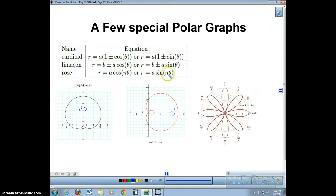Here is a rose, and a rose has a number. This will be the length of each petal, and the n tells you the number of petals that you have. So if n is odd, then you have n petals. If n is even, then you have 2n petals.